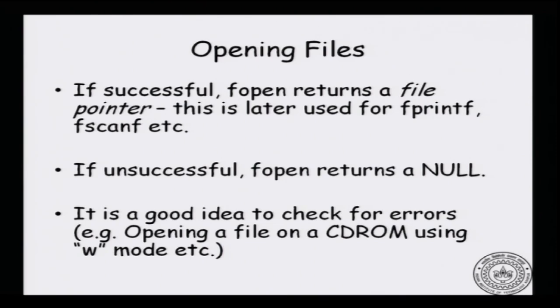Now let us look at what fopen returns. If successful, fopen returns a file pointer, which is later used for fprintf, fscanf, and fclose. If unsuccessful — for example, you try to open a non-existent file for reading, or try to write to a file on a CD-ROM that cannot be written to — fopen returns NULL. It is always a good idea to check for these errors: always check whether fopen has returned NULL.